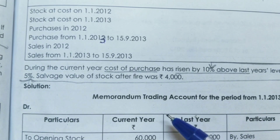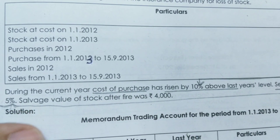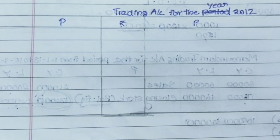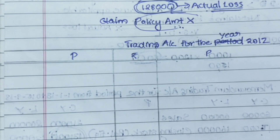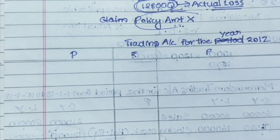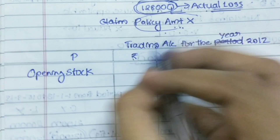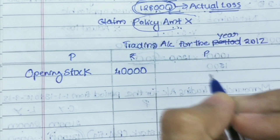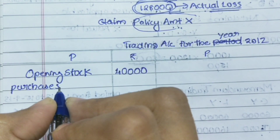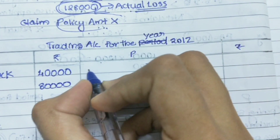The very first thing we have to do is prepare a trading account for the year 2012. I have prepared a trading account — you can prepare it in a more beautiful way, but let's go with this. We enter the opening stock of 40,000, then purchases for the year 2012, which is 80,000.